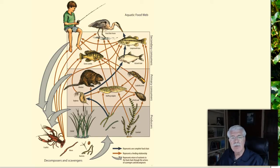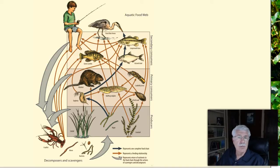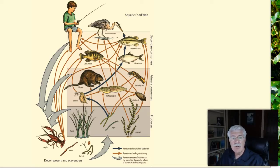Most animals have many sources of food at any point in time. Their food sources may vary by life stage, by their size, by the size of the prey, and by season of the year. Each food source may feed many different kinds of animals. To illustrate this, food web diagrams, such as shown here, show how different food chains are interconnected.